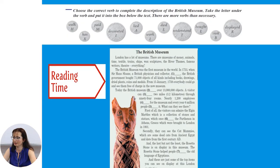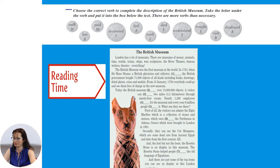What can they see there? First of all, visitors can admire the Elgin Marbles, a collection of stones and statues which once decorated the Parthenon in Athens, Greece, brought to London in 1801. Secondly, they can see the cat mummies — dead cats from ancient Egypt dating from the 1st century AD. And last but not least, the Rosetta Stone is on display, which helped people understand the language of Egyptians. These are just some of the top items you can see at this London museum.